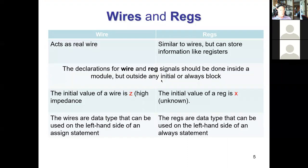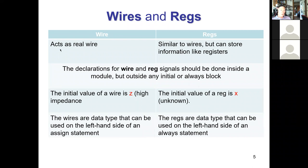Now we're going to cover wires and registers, arrays, loops, and testing a Verilog module. Wires act as real wires; registers actually store information — think of wires like wires and registers like flip-flops. Declarations for wires and registers should be done inside the module but outside any initial or always block. The initial value of a wire that's not connected or whose output is undefined will be listed as disconnected — high Z. The initial value of a register is X.